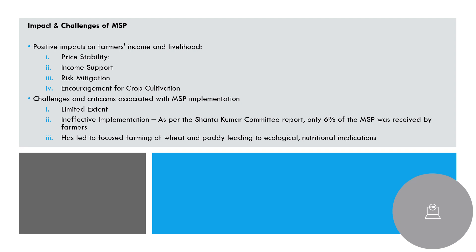What are the positive impacts of MSP? Price stability is a key benefit — for example, during 2014-15 around the broad season, farmers were able to sell their produce at a guaranteed rate. MSP also serves as risk mitigation and income support for farmers. These are the positive impact points you can write in your answers.